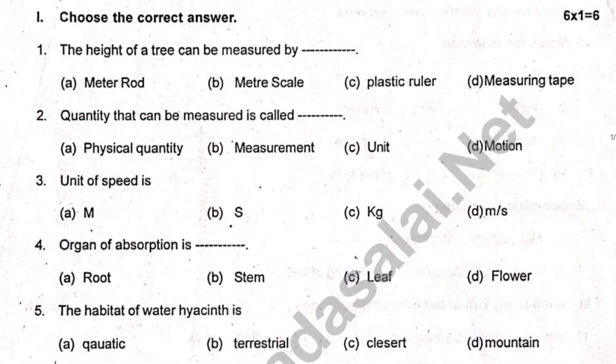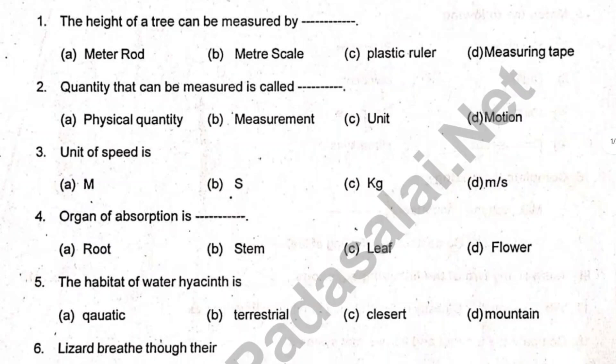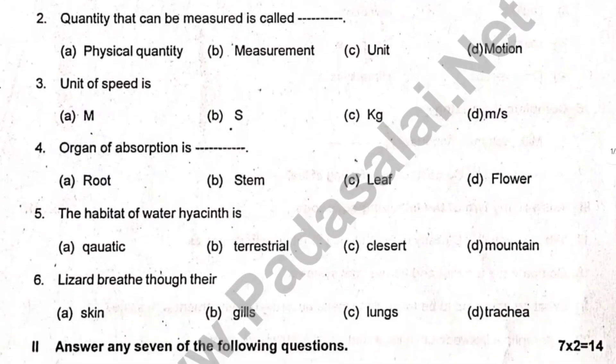First, choose the answer to the questions. The height of a tree can be measured by dash. Quantity that can be measured is scaled. The unit of speed is dash. Argon of absorption is dash.